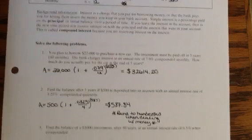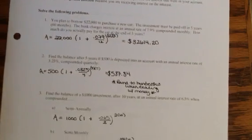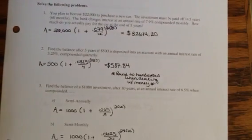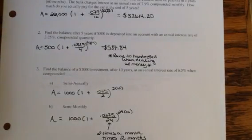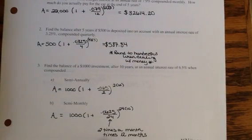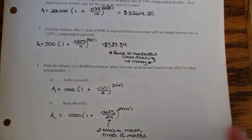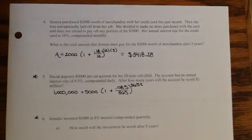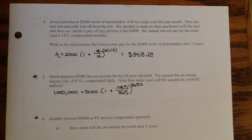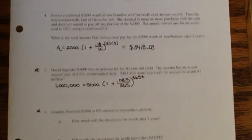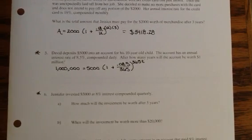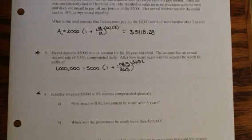So if I slide down, there's the answers to numbers 1, 2, and 3. You need to try those problems and make sure you can get those answers. And then there's number 4. And then I want to do number 5 together because number 5 is going to involve us using a logarithm.